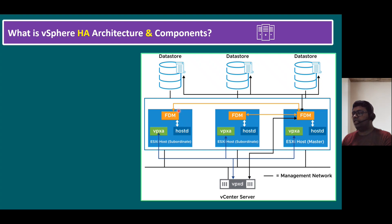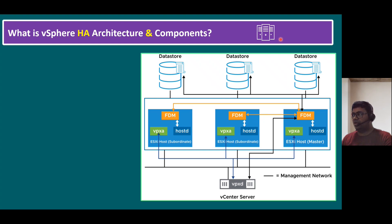In HA, there is a specific HA agent service called FDM — Fault Domain Manager. The agent name is FDM agent and the log file is fdm.log. When we create a cluster and enable the HA feature, by default the FDM agent starts on all ESXi hosts. When ESXi host one goes down, the other hosts wait for the first 45 seconds, then a second 45 seconds, and at the third 45-second mark, they decide the host is down.